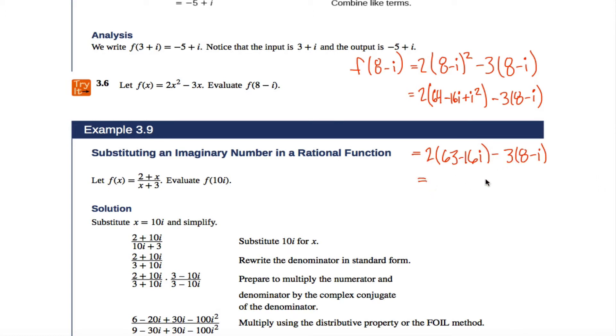The way I will simplify further is by distributing through. I'll take this 2 and distribute it through and get, what is that, 126 - 32i. And then be careful, it's not distributing a 3 through, it's distributing a -3 through if you want to get rid of the parentheses. So I will get -24 + 3i.